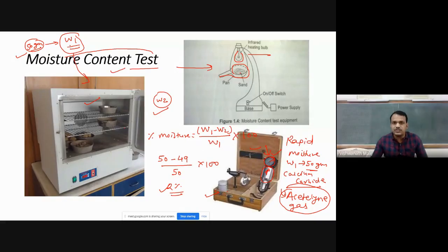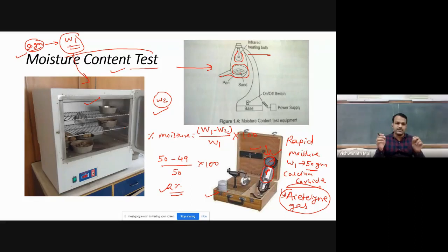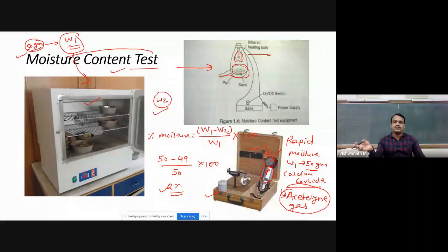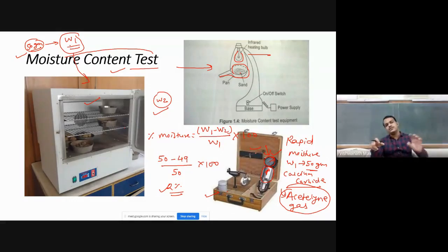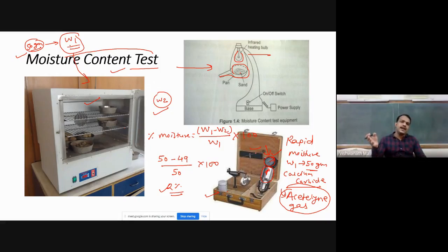The pressure reading is correlated with moisture content using a standard chart. For example, if pressure is 10 g/cm² that corresponds to about 2% water content; if pressure is 50 g/cm² it corresponds to about 10–12% water. The chart gives the standard relationship between pressure and water content, so we read off the moisture percentage directly from the pressure value.